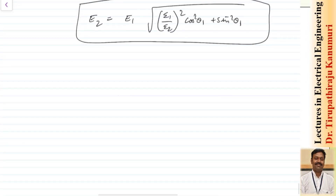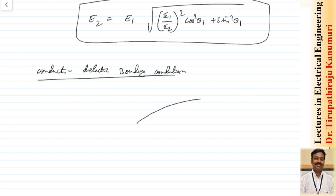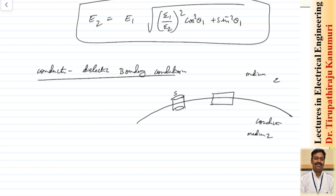Now let us take the conductor and dielectric boundary conditions. One side is a conductor (medium 2) and the other side is a dielectric with permittivity epsilon (medium 1). To calculate the normal component I take a surface with height delta h, and for the tangential component I take a loop a b c d. The tangential component is Et, the normal component is En, and their resultant gives E.